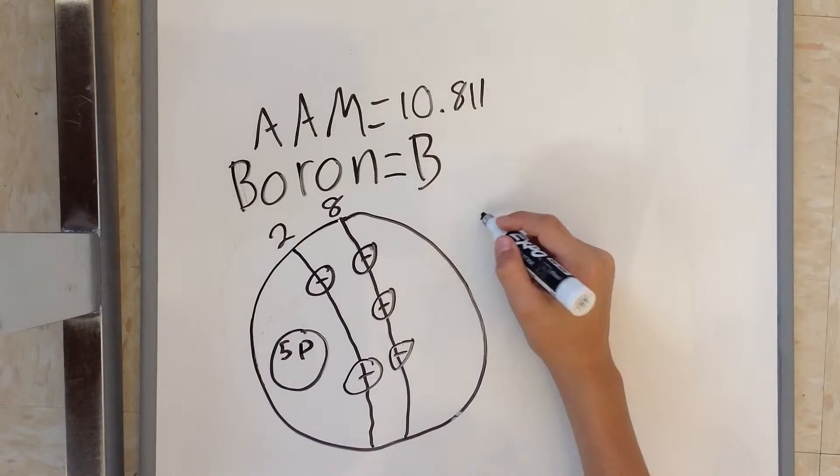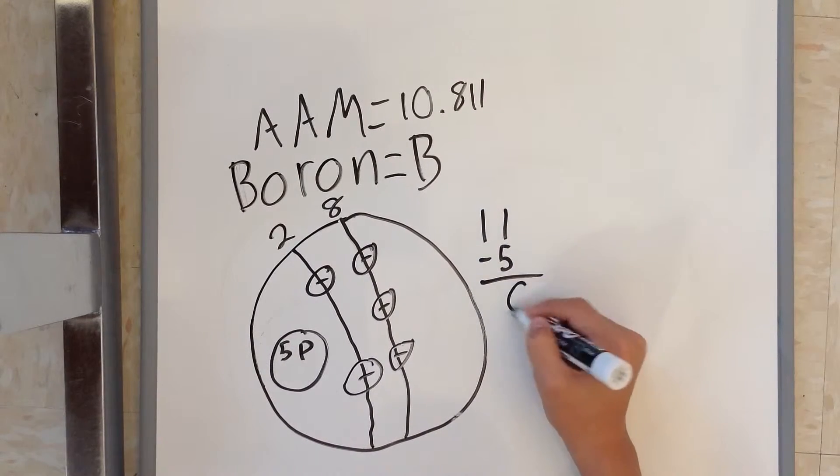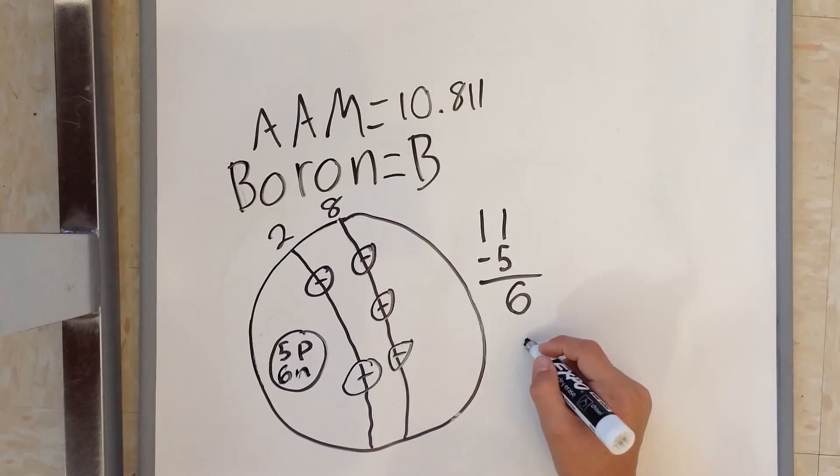Once we've done that, we're going to take the average atomic mass, which you should find ahead of. Round it up and subtract it by the number of protons, getting the number of neutrons.